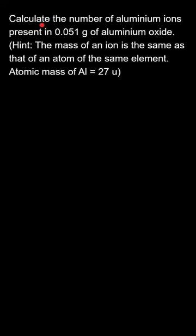The question says: calculate the number of aluminium ions present in 0.051 grams of aluminium oxide. The hint given is that the mass of an atom is the same as that of the atom of the same element, so the atomic mass of aluminium is given to be 27u.